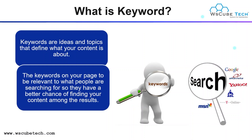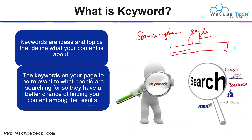Keywords are the ideas and topics that define what your content is about. The keywords on your page need to be relevant to what people are searching for, so they have a better chance of finding your content in the results. For finding any information we use a search engine like Google. In Google's search bar, we can write a particular word to find information, and that particular word or phrase is known as a keyword.